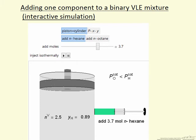I'm going to describe the simulation on the left, where we're adding one component to a binary mixture that's already in vapor-liquid equilibrium in a piston and cylinder.